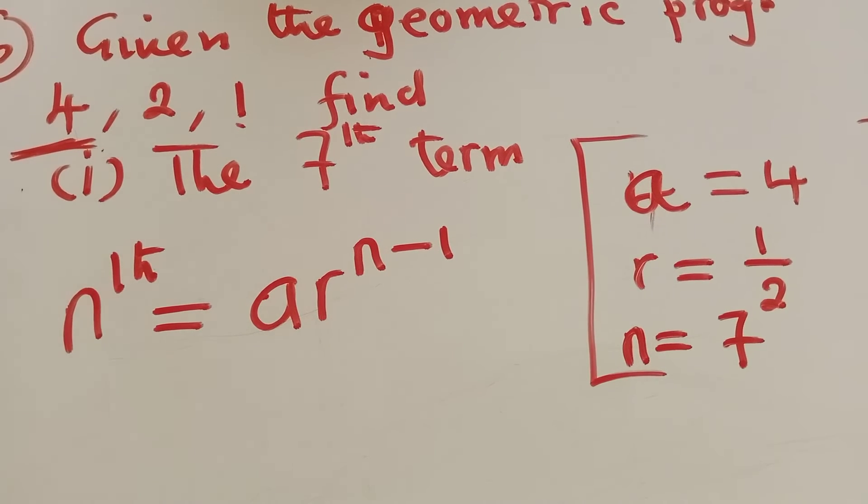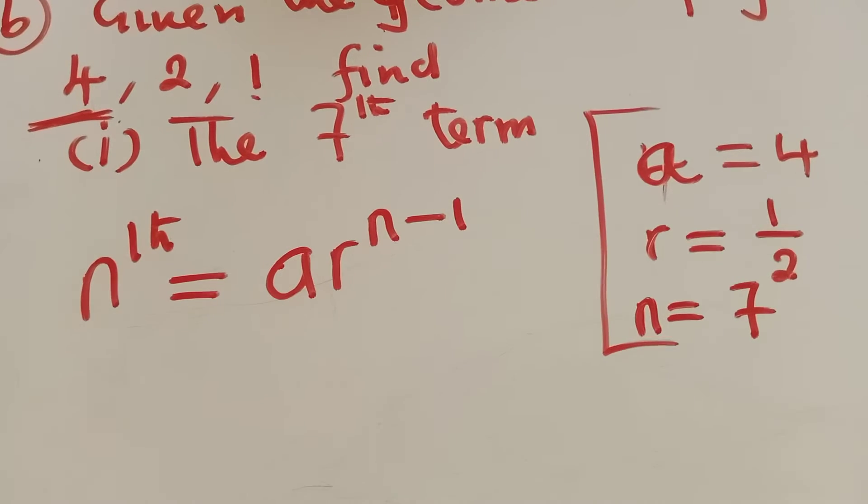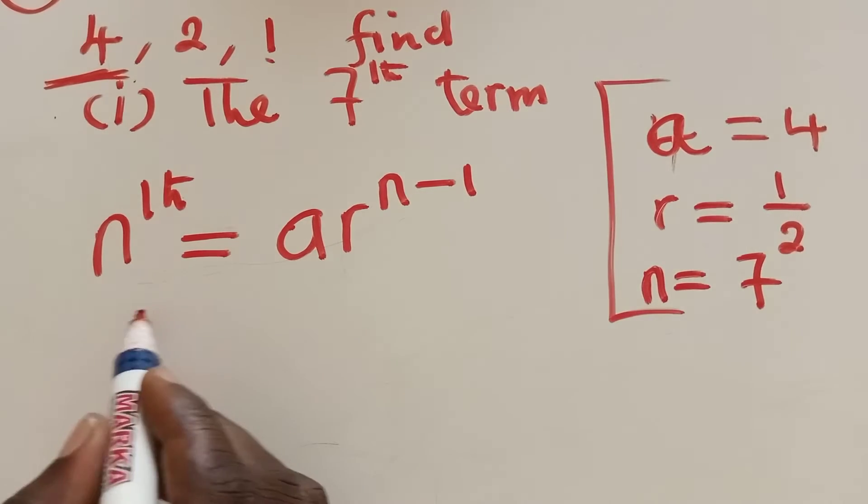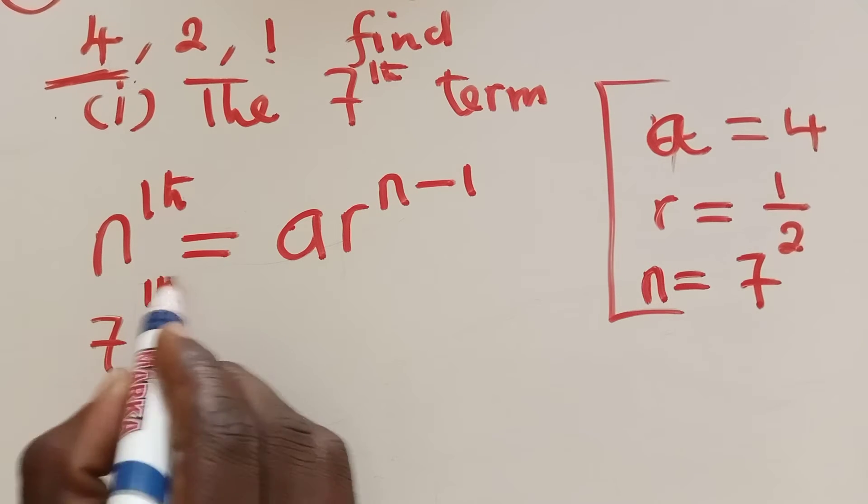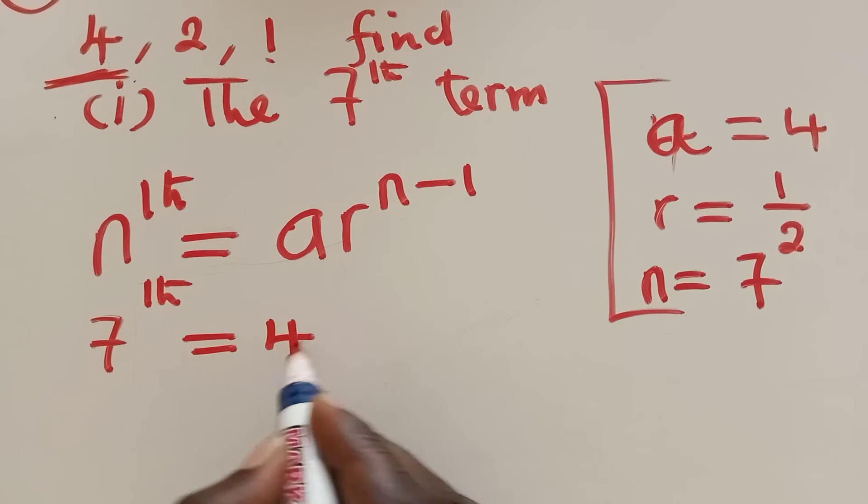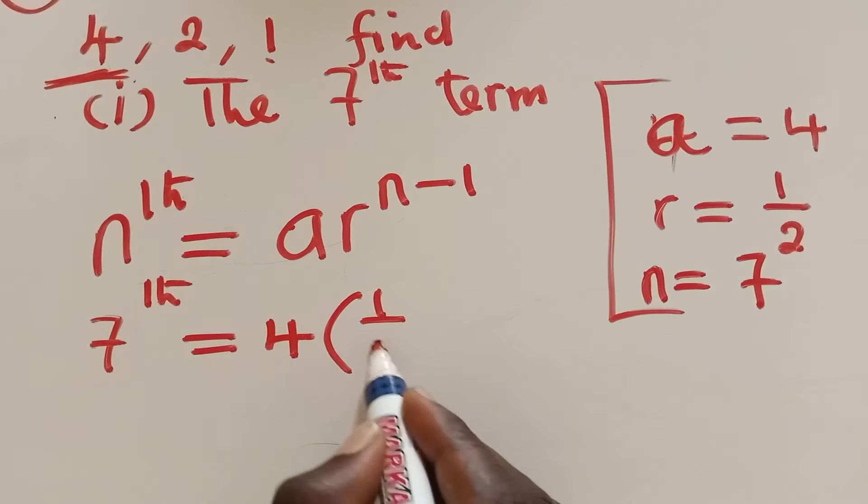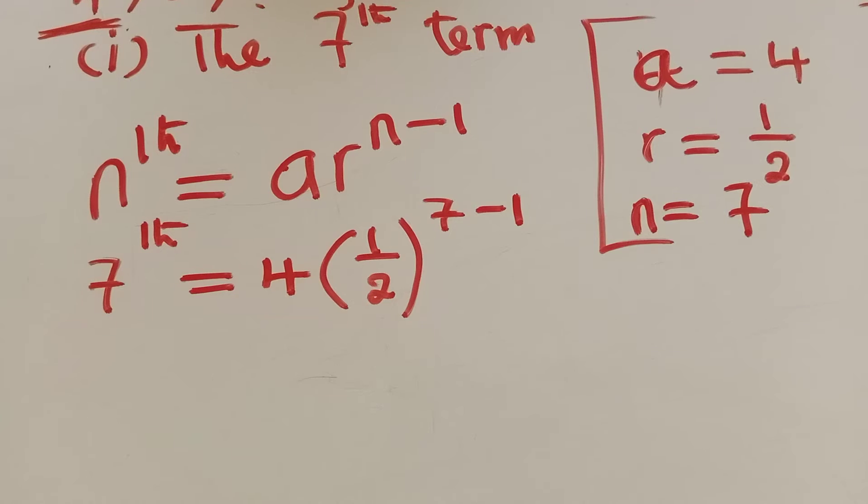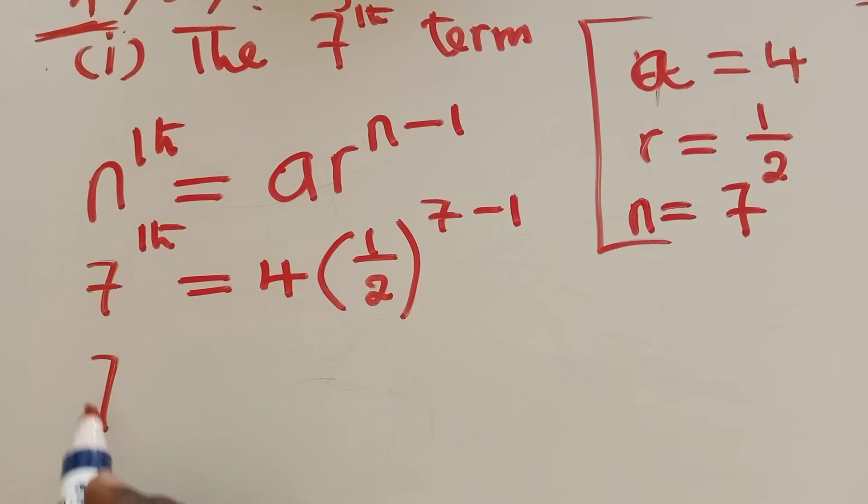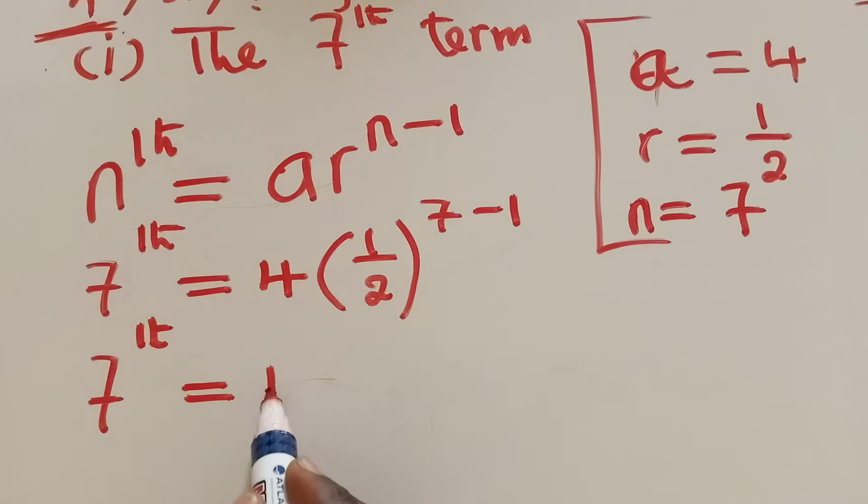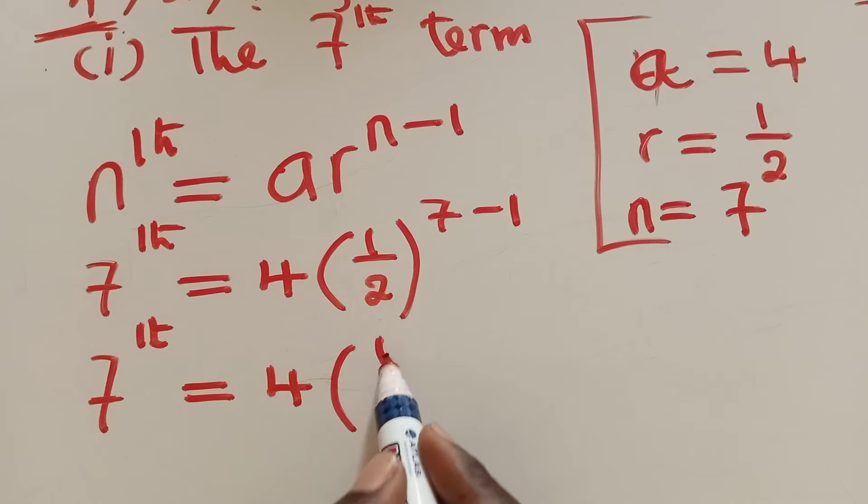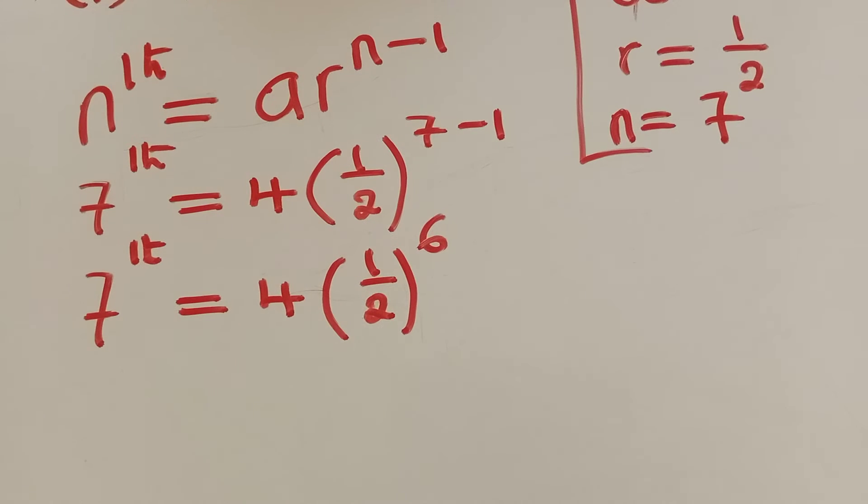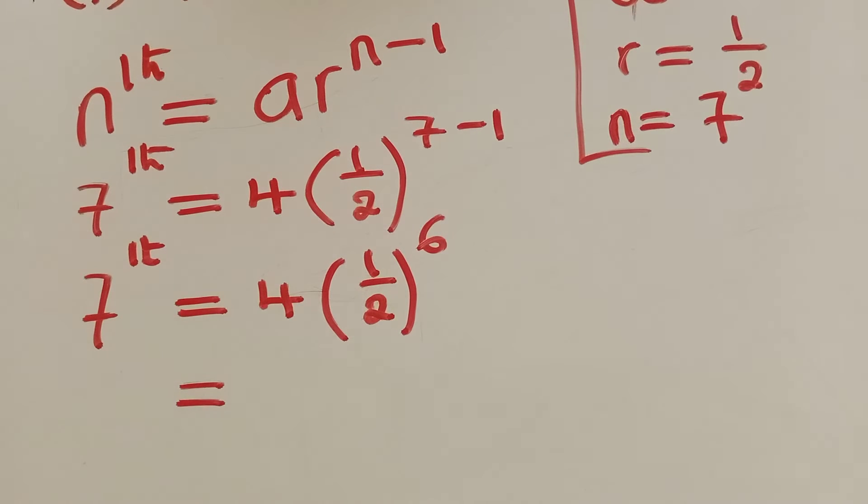So now, we can plug in. Since we have what we need, we can plug in. We say n is 7. So we're looking for the 7th term, which is equal to our a is 4, our r is 1 over 2, our n is 7 minus 1. So we just plug in the stuff. So our 7th term will be equal to 4 times 1 over 2 to the power 6.